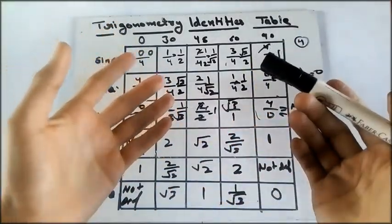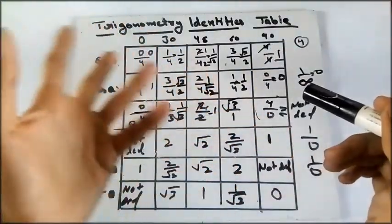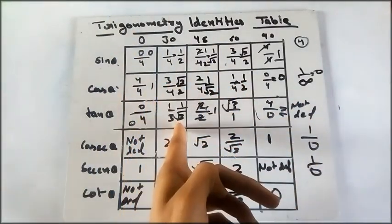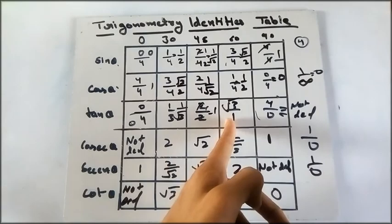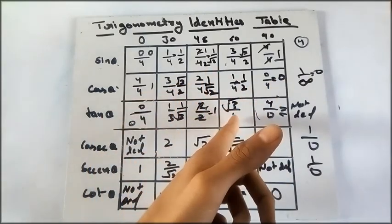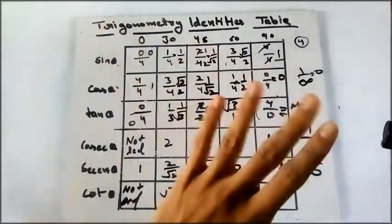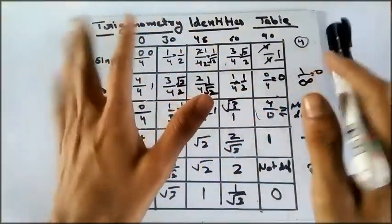So you can also use this method. This is really easy, and I will prefer this one over just cramming this, because sometimes we confuse this between 1 upon root 3, root 3. And if you got any value wrong, then your whole question will be wrong and you will get a zero. So this is the right way of doing it.